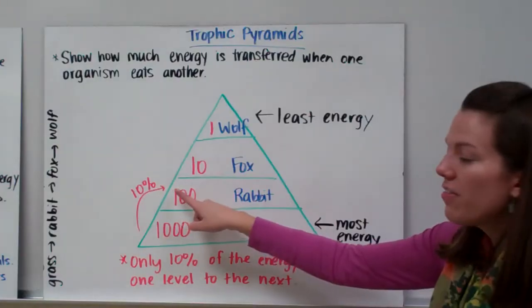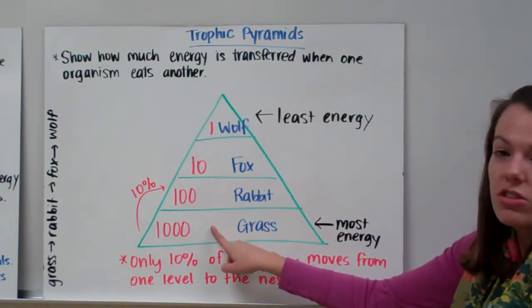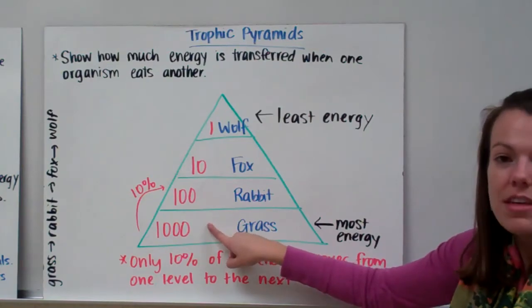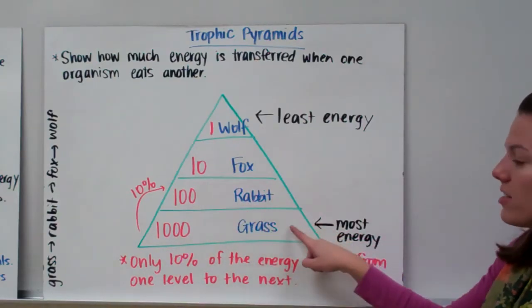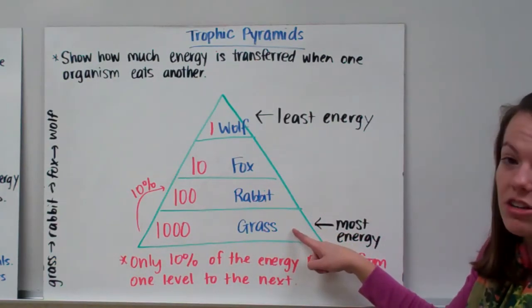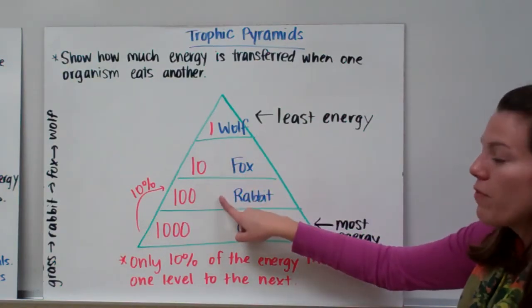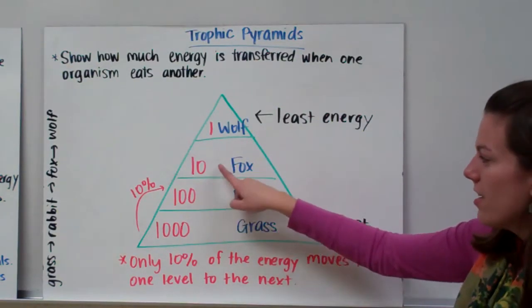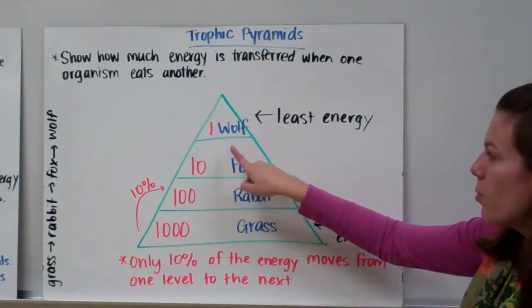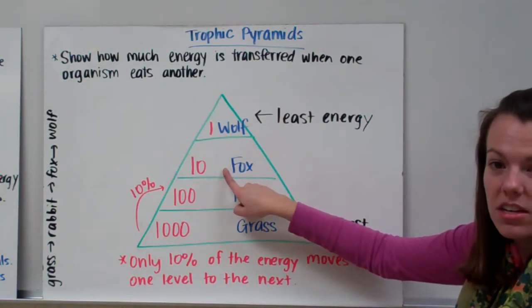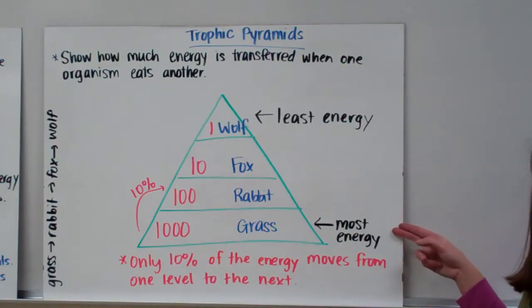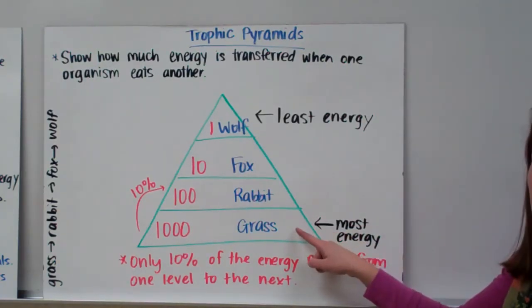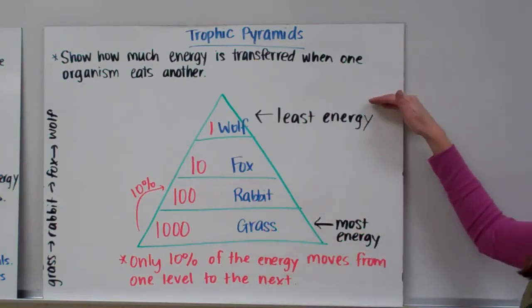Only 10% of the energy actually gets from one level to the next. So if we started with 1,000 units of energy, divide by 10 and you get 100 — when a rabbit eats grass, it only gets about 10% of the energy the grass had. When the fox eats the rabbit, it only gets 10% of that energy: 100 divided by 10 is 10. And when the wolf eats the fox, it only gets 10% as well: 10 divided by 10 is 1. So the bottom of the trophic pyramid always has the most energy — those are our producers, getting energy from the sun. The top always has the least amount of energy.